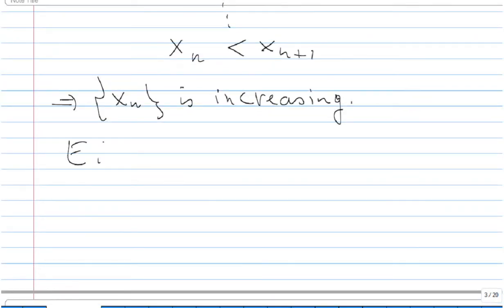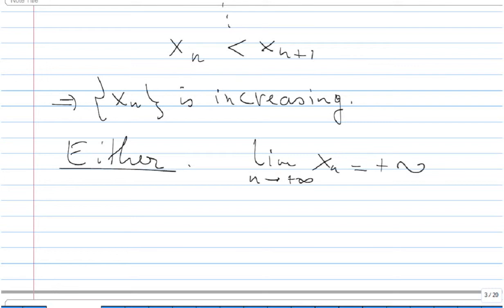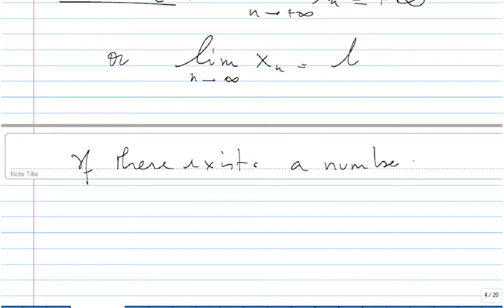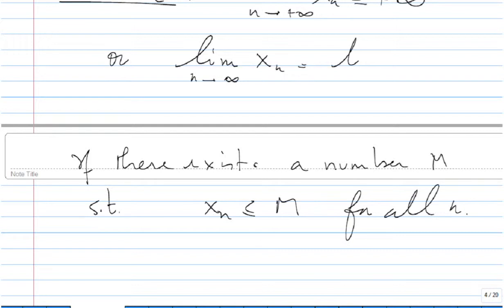In terms of limits, we only have two options. Either the limit of xₙ goes to +∞, so the sequence explodes, or we have a finite limit L = lim xₙ as n → ∞. If there exists a number M such that xₙ < M for all n, then it will never go to infinity, and the limit of xₙ will exist and be equal to L.